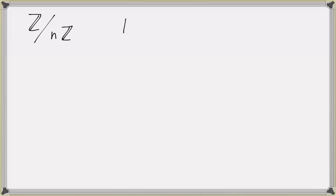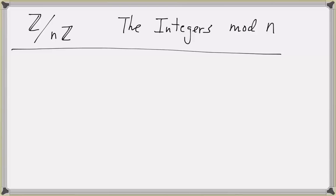Next we will discuss a very important set which will be used in many examples in abstract algebra. This set is called the set of integers mod n. The notation will become more clear when we discuss quotient groups later this semester, but for now we'll use this notation. So let's first define what it means for two integers to be congruent.